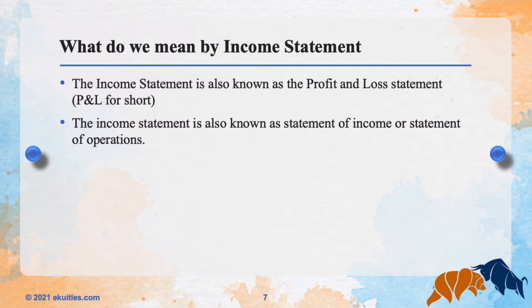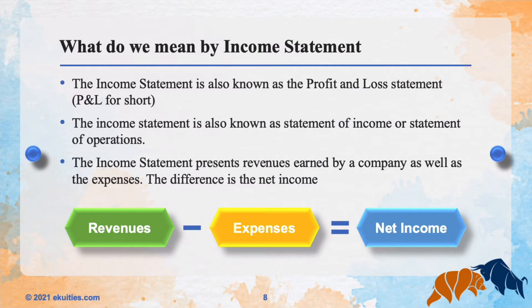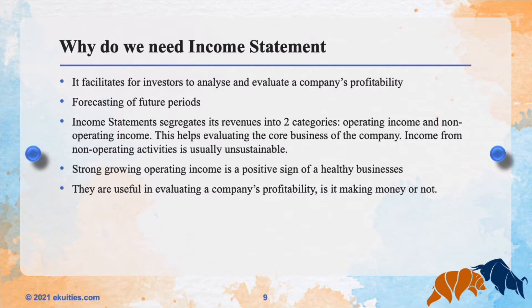So first question: what do we mean by income statement? The income statement is also known as the profit and loss statement, or P&L for short, and also as the statement of income or statement of operations — Apple calls it statement of operations. In the income statement, we see revenues and expenses. If you deduct expenses from revenues, you get the net income. We need the income statement because it makes it easier for investors to analyze and evaluate a company's profitability and forecast future periods.